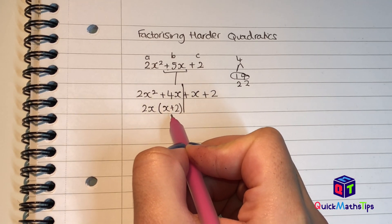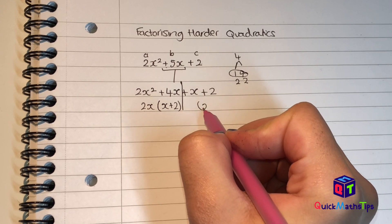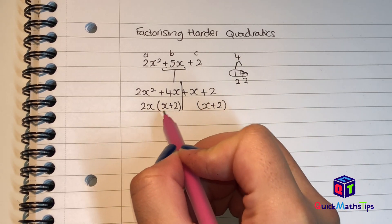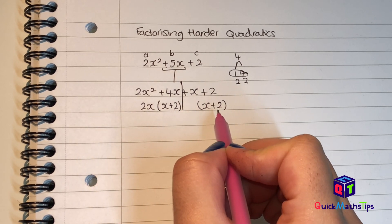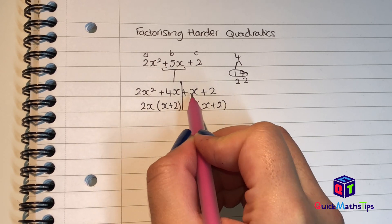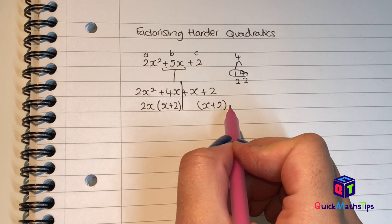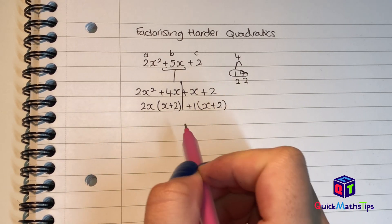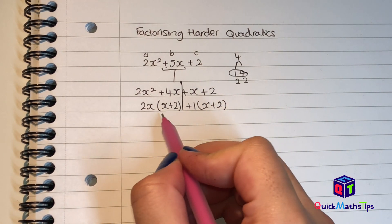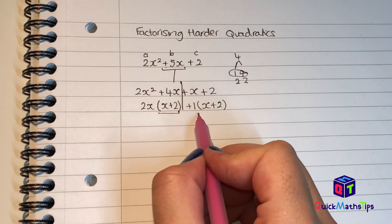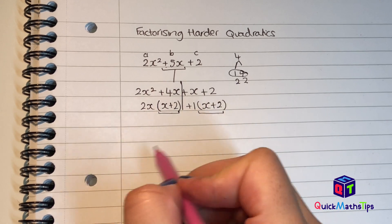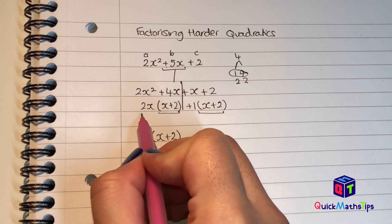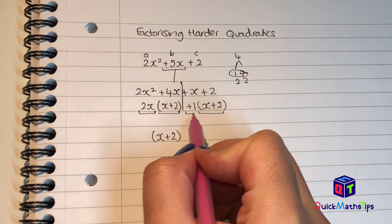Because I have x plus 2 inside my brackets on this side, I have to have x plus 2 inside my brackets on that side — whatever's inside my brackets here has to be inside my brackets here. If I do x plus 2 divided by x plus 2, I'm left with plus 1. So I'm going to have plus 1 on the outside. My final two brackets will be the repeated bracket — the one that came twice — which is x plus 2, and the stuff on the outside, which is 2x plus 1.